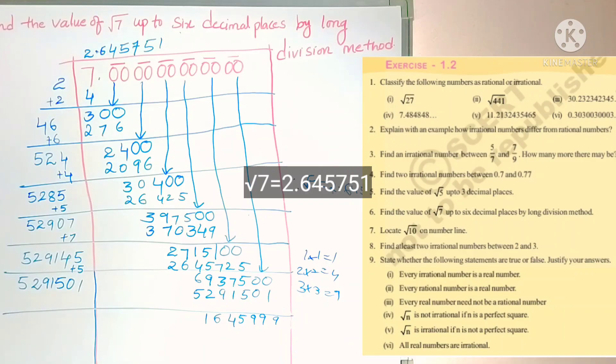Like this we can find out the value of root 7 up to 6 decimals by long division method.